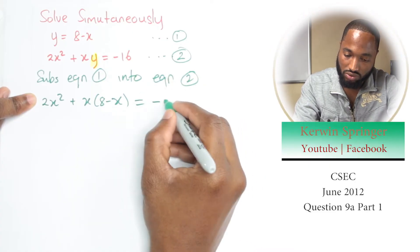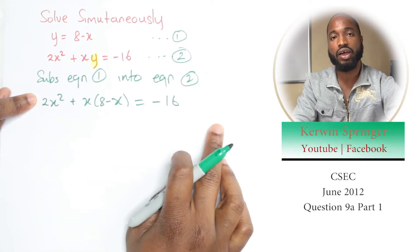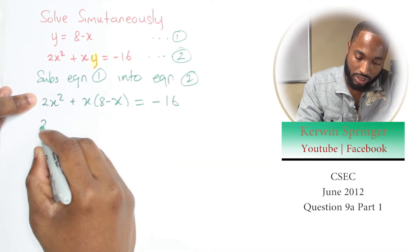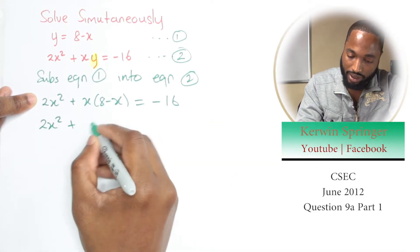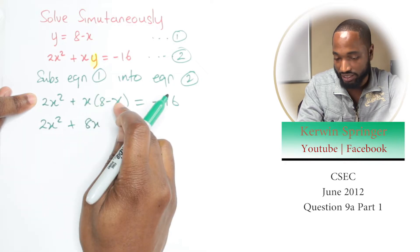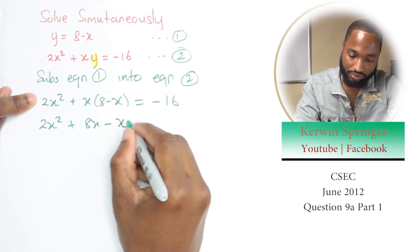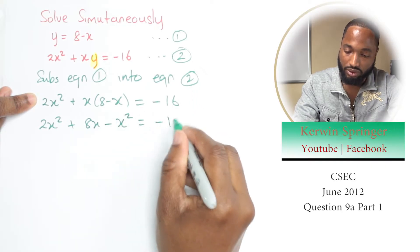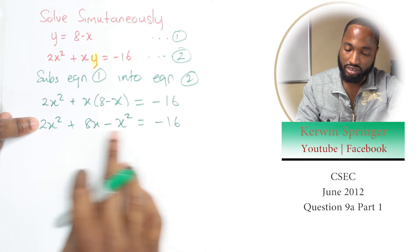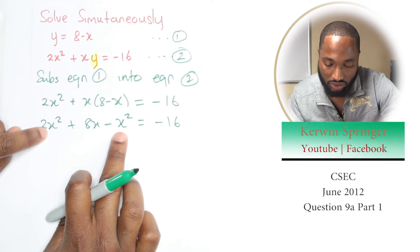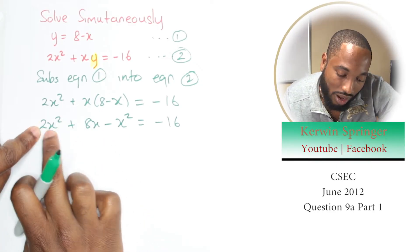Equals negative 16. Bring back 16. Now I just simplify this and see what happens. 2x² plus x by 8 is 8x, x by x is x², but there's a negative sign.